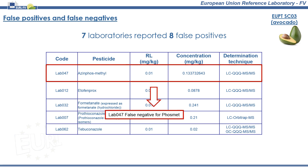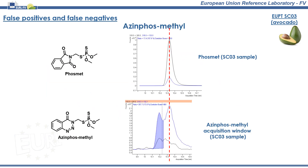This laboratory, for instance, reported a false positive result for azimphosmethyl and, concurrently, a false negative result for fosmet, which was indeed present in the sample. On the left, we have drawn the chemical structures for fosmet on the top and azimphosmethyl on the bottom. As you may observe, these compounds present a somewhat similar structure, sharing the phosphorodithioate moiety.